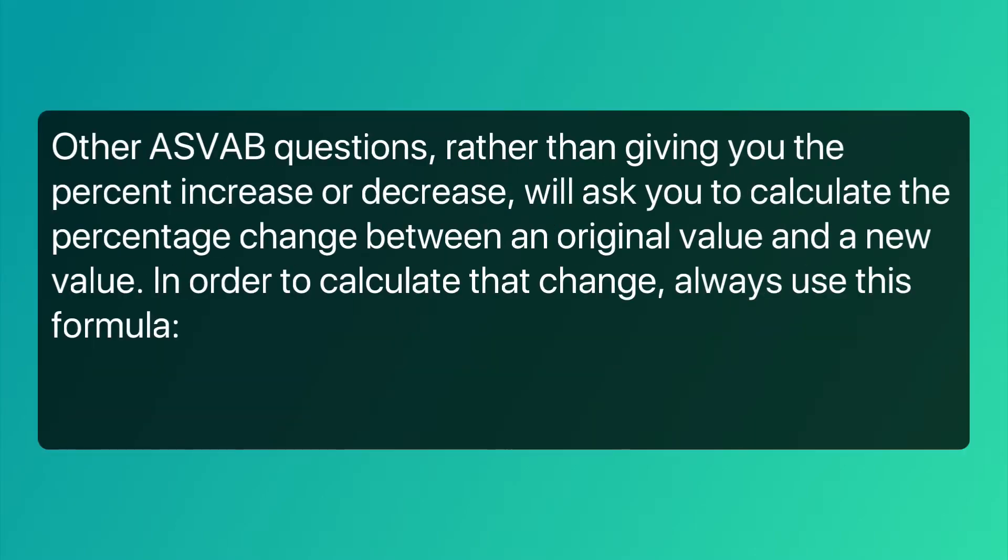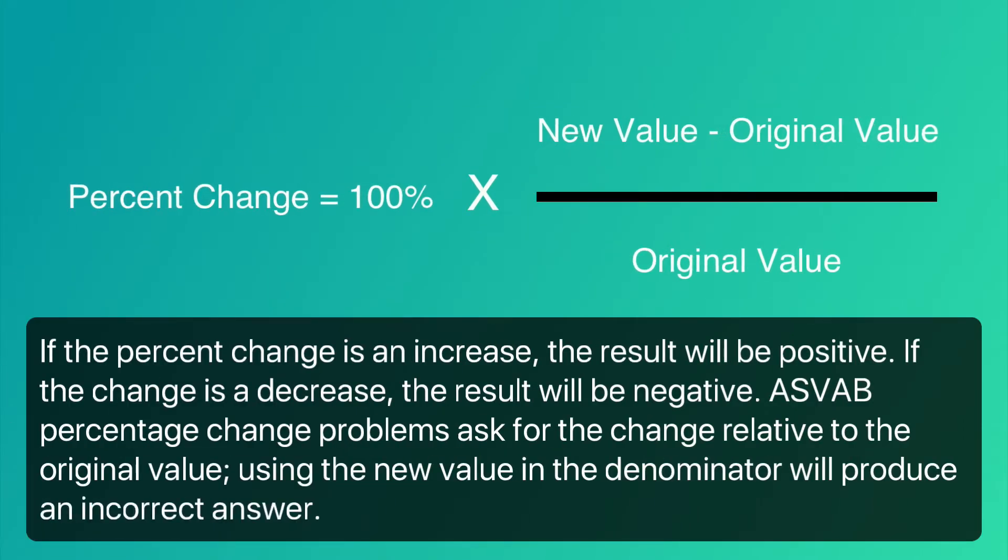On other ASVAB questions, rather than giving you the percent increase or decrease, they'll ask you to calculate the percentage change between an original value and a new value. In order to calculate that change, always use this formula. If the percentage change is an increase, the result would be positive. If the change is a decrease, the result would be negative. ASVAB percentage change problems ask for the change relative to the original value. Using the new value in the denominator will produce an incorrect answer.